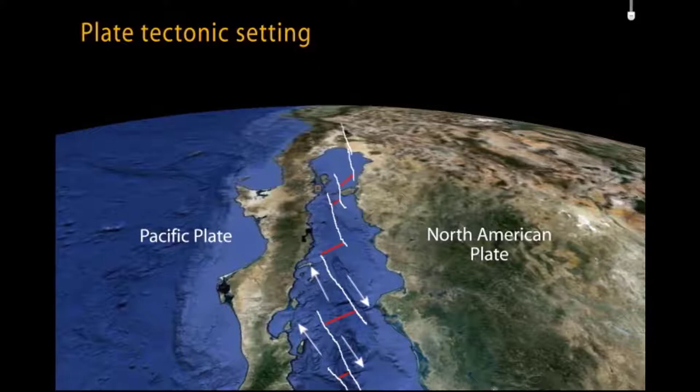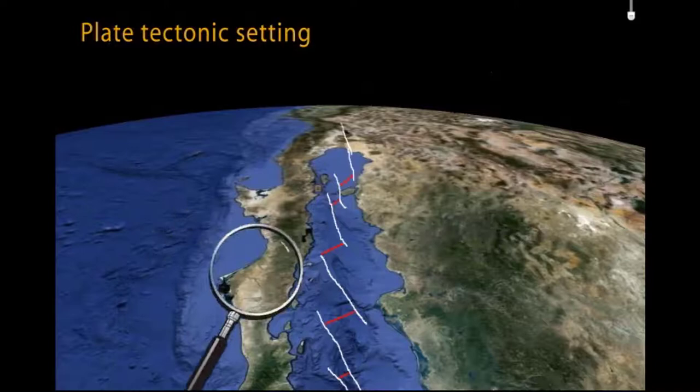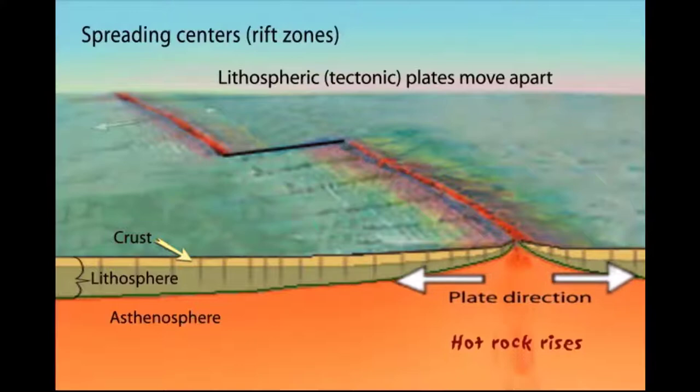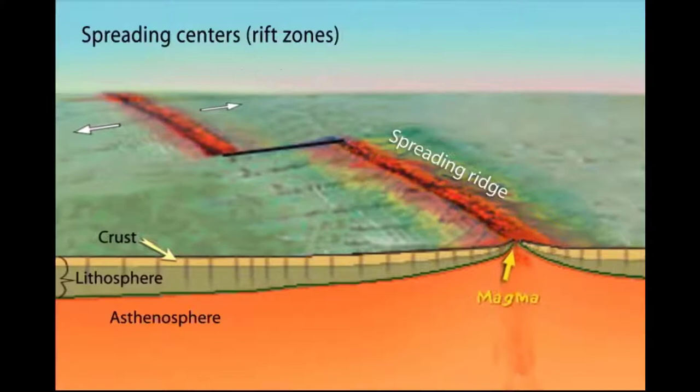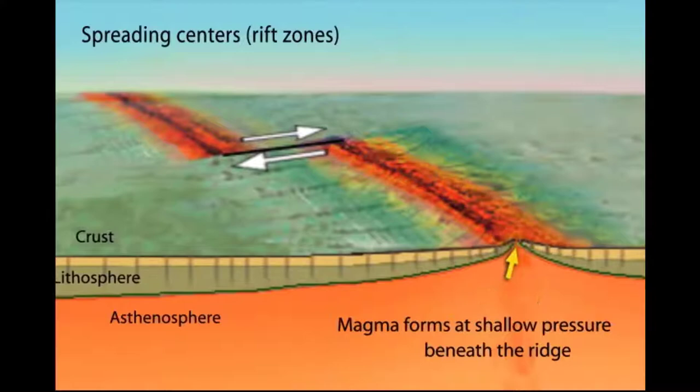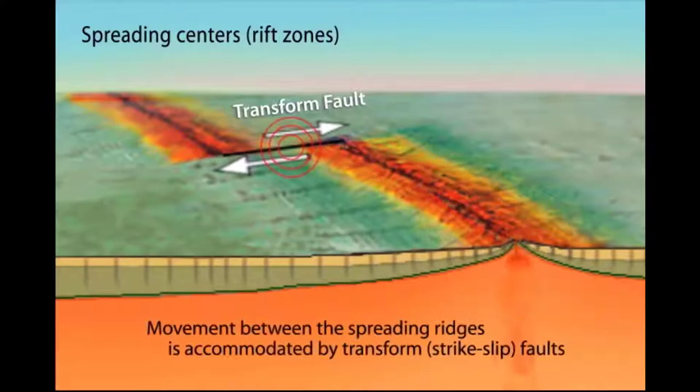If we zoom in, we can see the processes occurring. As the lithospheric plates move apart, heat rises beneath the mid-ocean ridge. Magma forms at shallow pressures and creates new rock at the spreading ridges. The plates move away in conveyor belt-like fashion. Movement between the ridges is accommodated by transform faults, where large earthquakes occur due to friction between the plates. Smaller earthquakes also occur along the ridges.